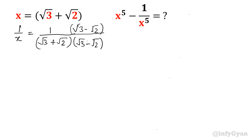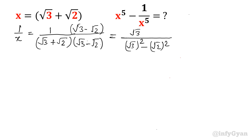So I will multiply by root 3 minus root 2 in both the denominator and numerator. The denominator will be (a+b)(a-b), which is a squared minus b squared. The numerator will be root 3 minus root 2. Root 3 squared is 3, root 2 squared is 2, so 3 minus 2 is 1. So ultimately 1 over x comes out to be root 3 minus root 2.